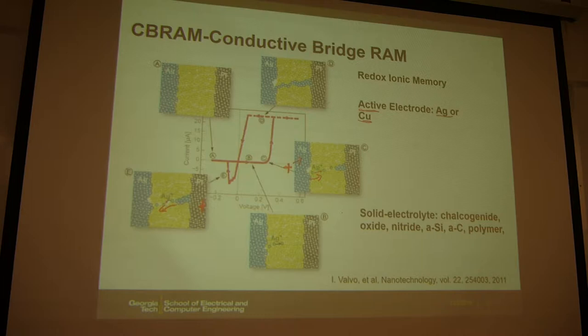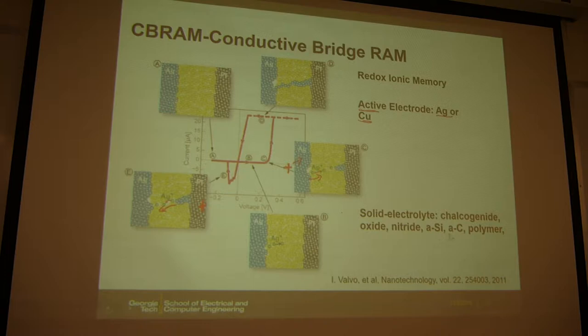The electrolyte can be chalcogenide, oxide, nitride, amorphous silica, amorphous carbon, or even polymer — as long as silver or copper can diffuse across those materials, you can create this conductive bridge. The electrolyte thickness is on the order of tens of nanometers.